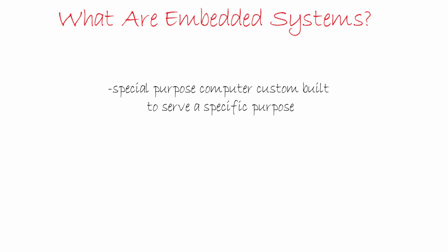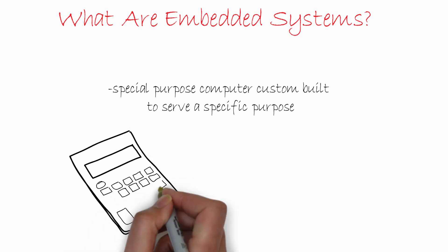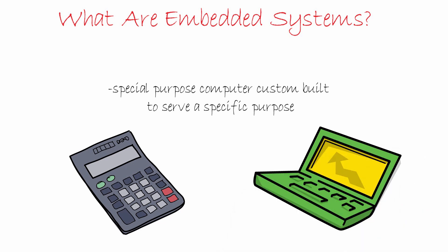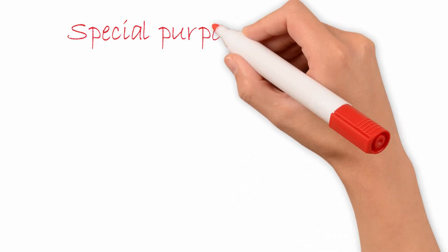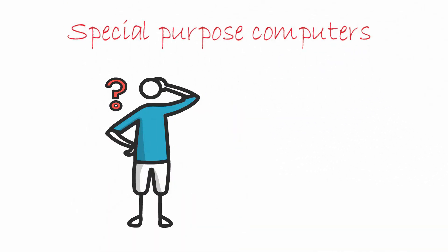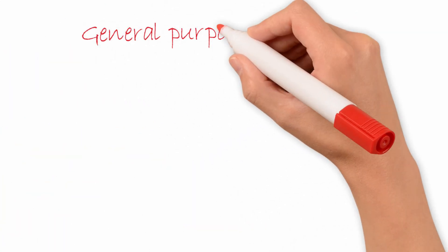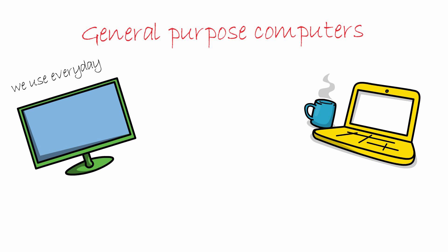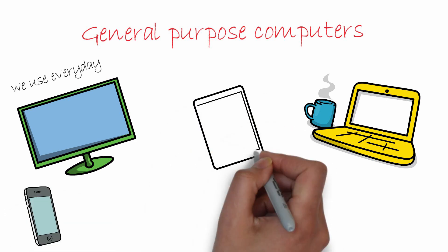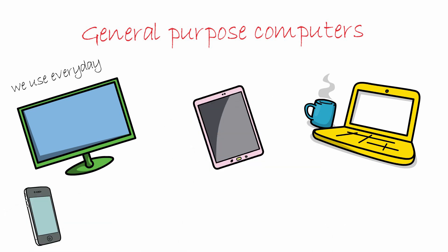Let me quote an example for you. A calculator is a special-purpose computer as compared to a laptop. So what are special-purpose computers? To understand that, let's first look at the other end of the spectrum, which is general-purpose computers. General-purpose computers are those that we use every day, like our desktops, laptops and Macs. Even our smartphones and tablets are more towards the general-purpose end of the spectrum, which means they have more than one specific purpose.